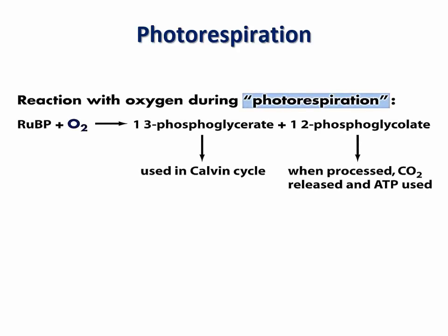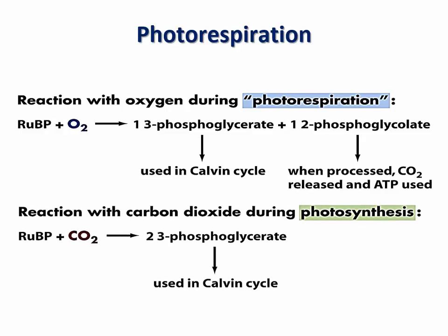Rubisco is also inefficient, as it can bind oxygen in its active site. When oxygen binds to the active site of Rubisco, it combines oxygen with ribulose bisphosphate, resulting in the formation of only one 3-phosphoglycerate. The other molecule formed by this reaction is 2-phosphoglycerate, which cannot be used by the Calvin cycle. Plant cells process 2-phosphoglycerate in another pathway that results in the production of carbon dioxide and the consumption of ATP, causing a reduction in the level of formation of sugars by photosynthesis. Recall that when CO2 is fixed by Rubisco, the result is the formation of two molecules of 3-phosphoglycerate. This reaction by which Rubisco fixes oxygen is known as photorespiration.